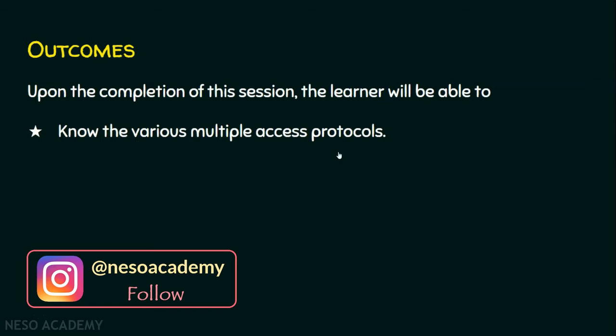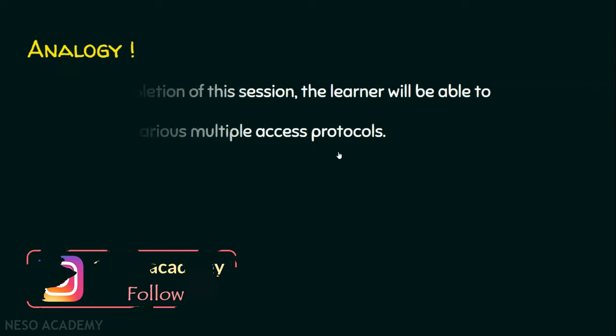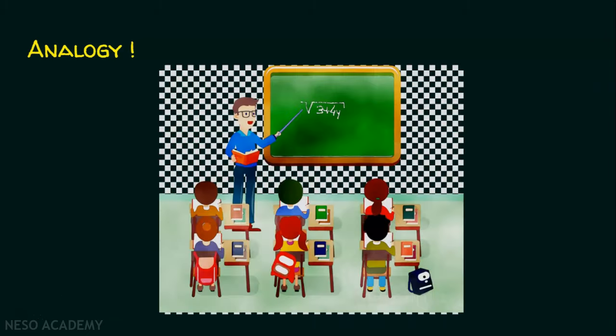Before going into the topic of multiple access protocols, let's see an analogy. Assume in a classroom full of students, when a teacher asks a question and all the students start answering simultaneously, a lot of chaos is created. It is the job of the teacher to manage the students and make them answer one at a time. So how is this analogy related to computer networks?